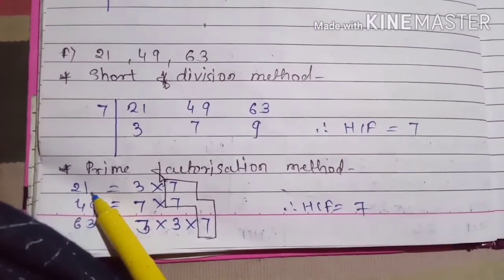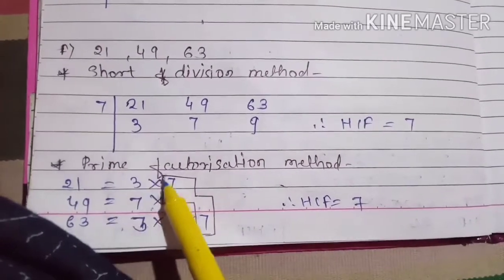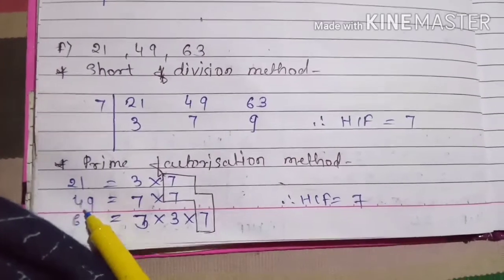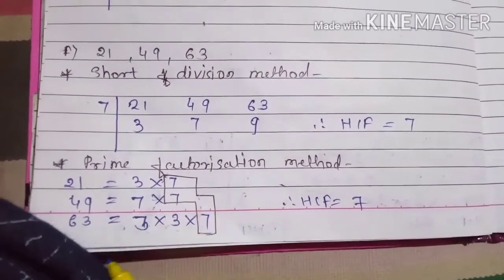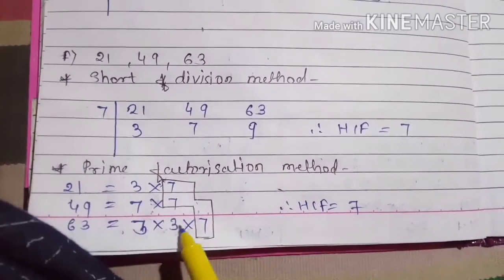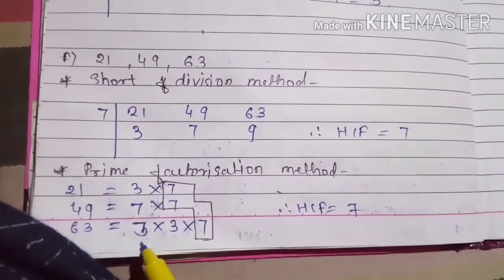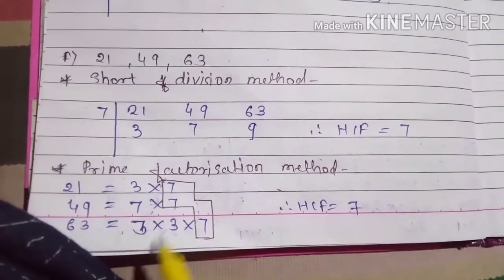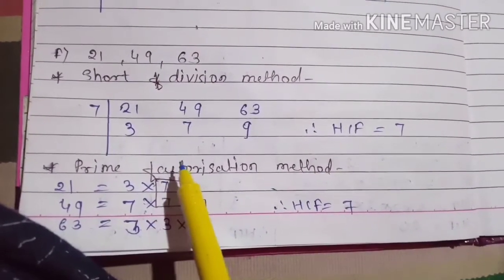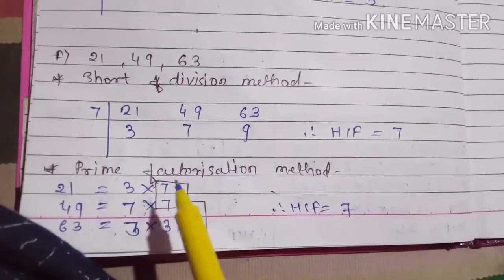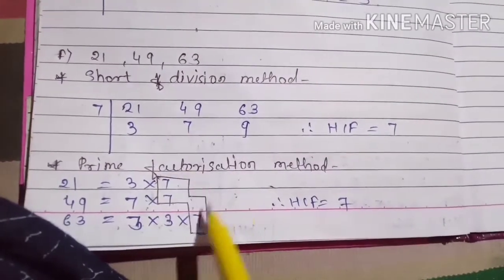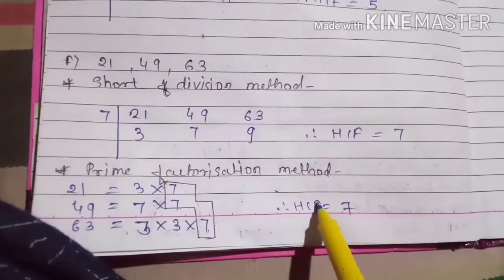Now using the prime factorization method: factorize 21 to get 3 × 7. Factorize 49 to get 7 × 7. Factorize 63 to get 3 × 3 × 7, because three threes are nine and nine sevens are 63. Find the common number present in all three — seven is present in all three factorizations. So the HCF is 7.